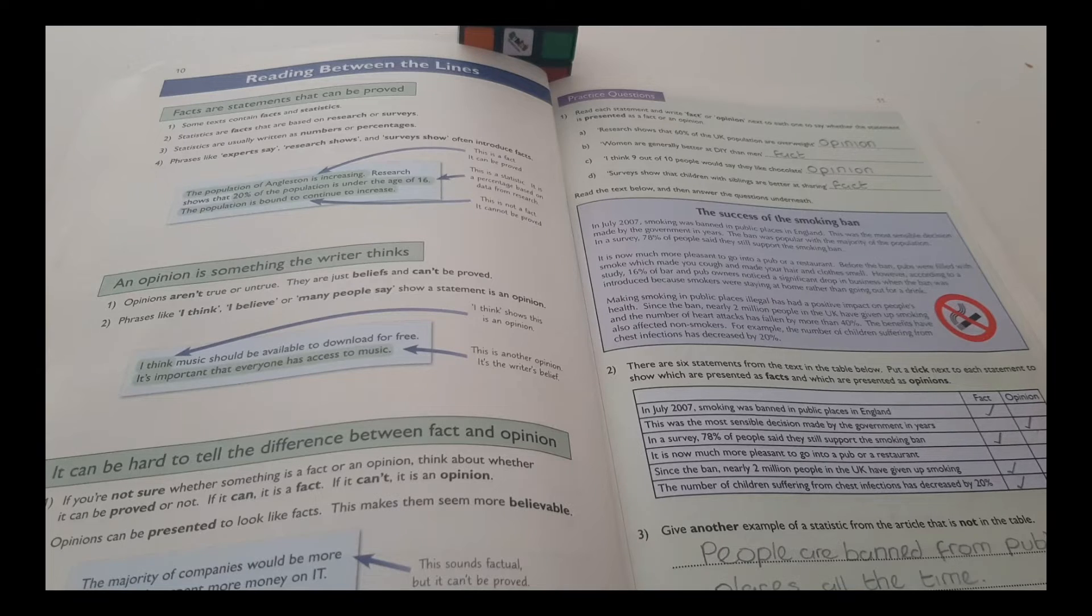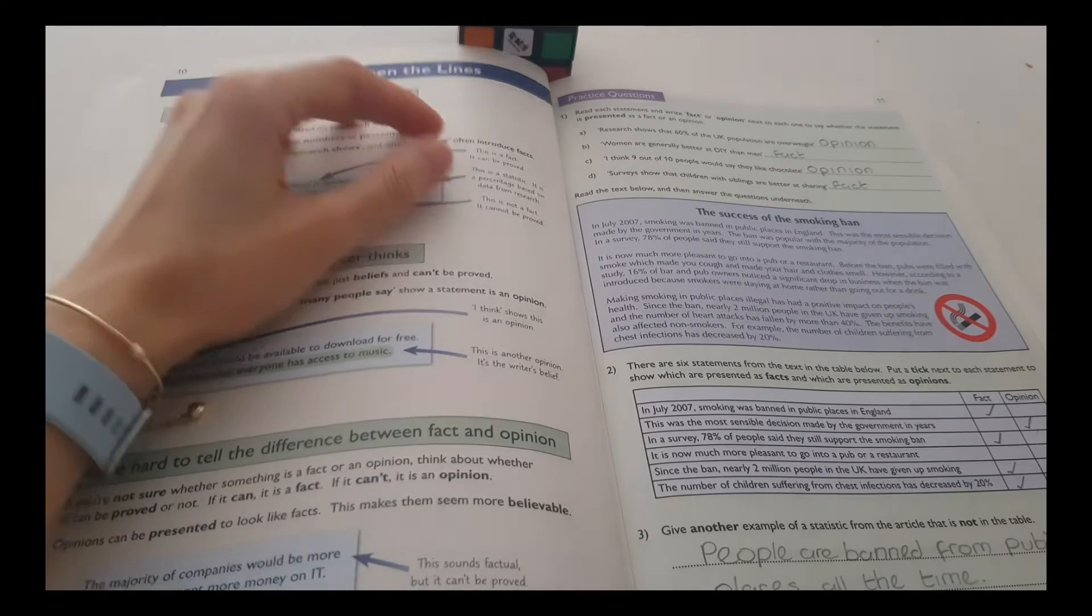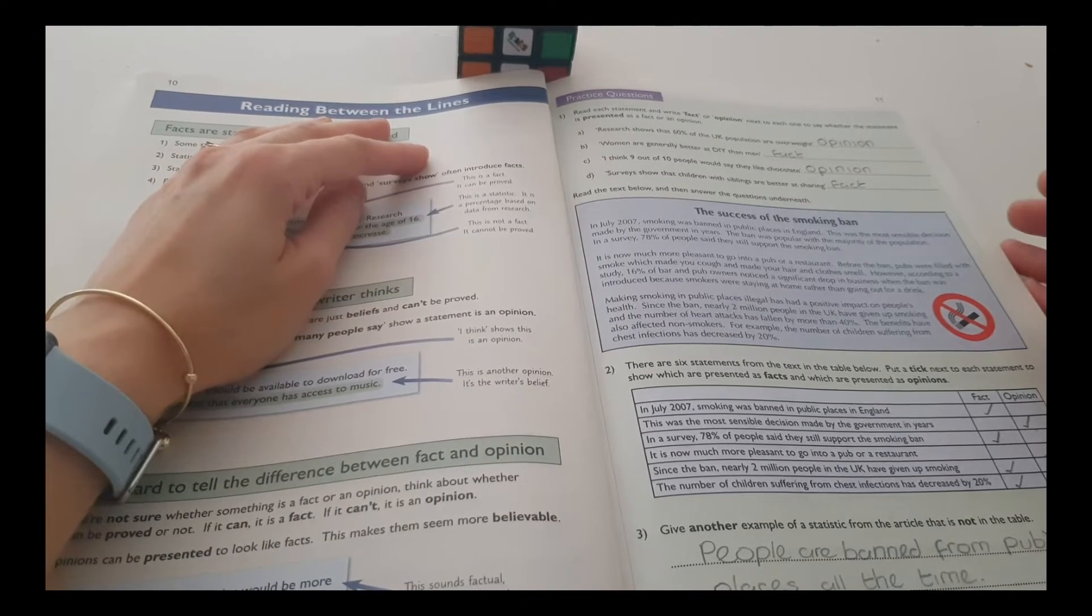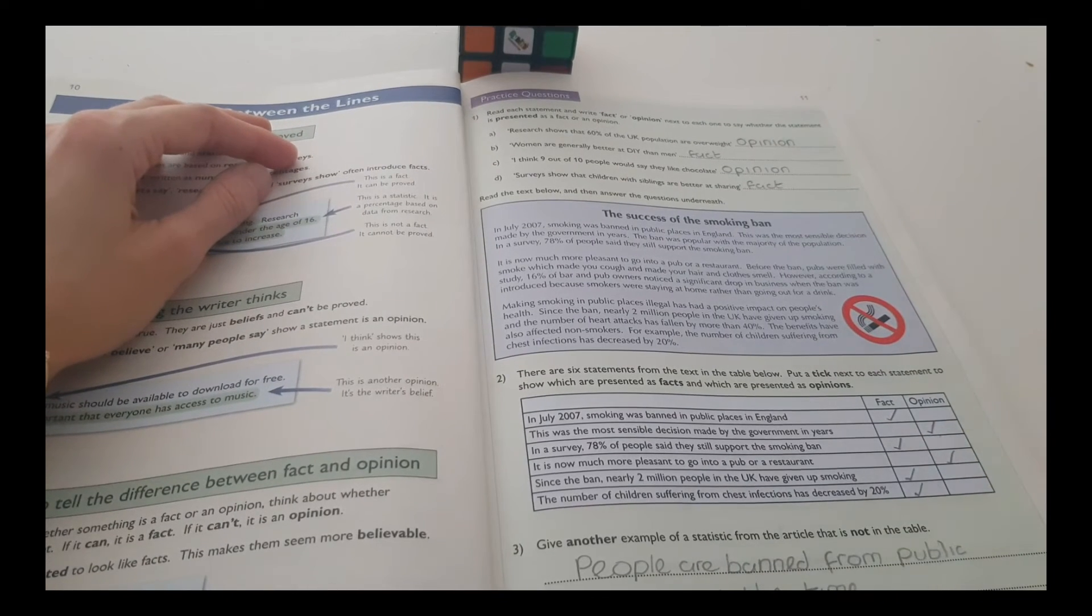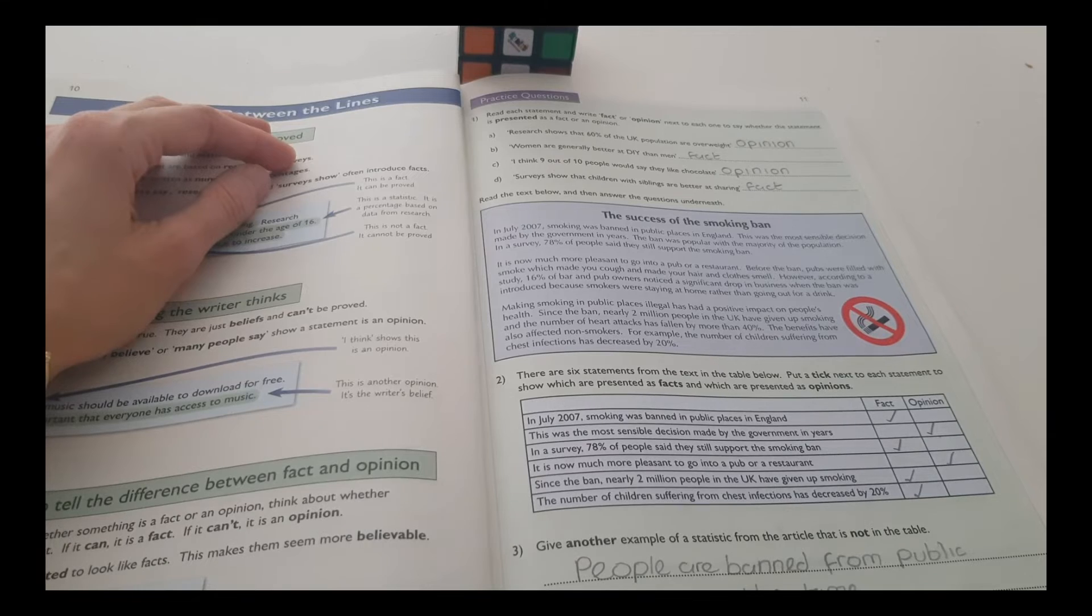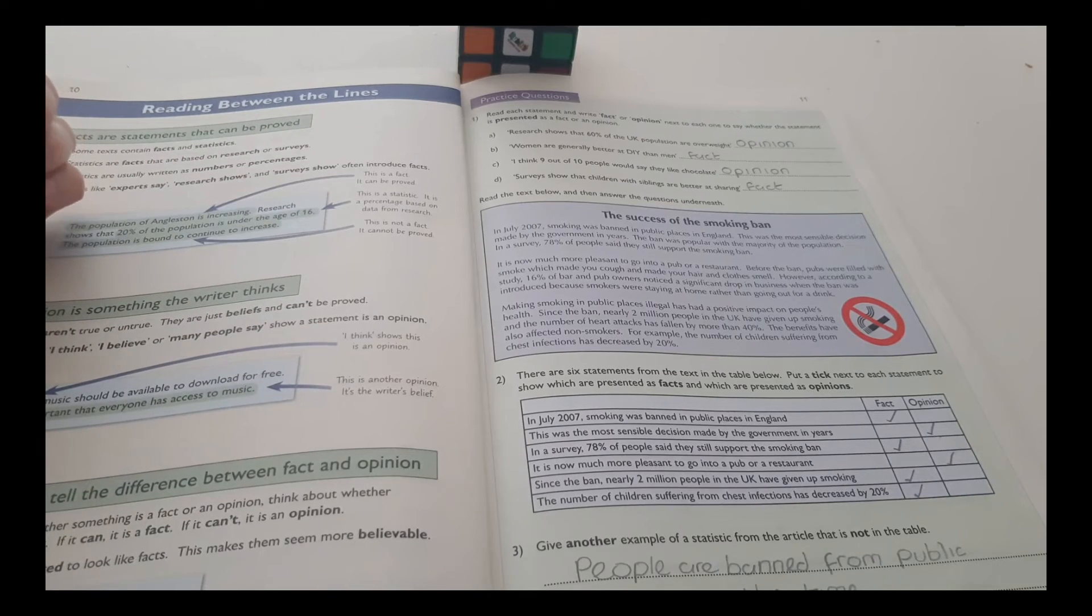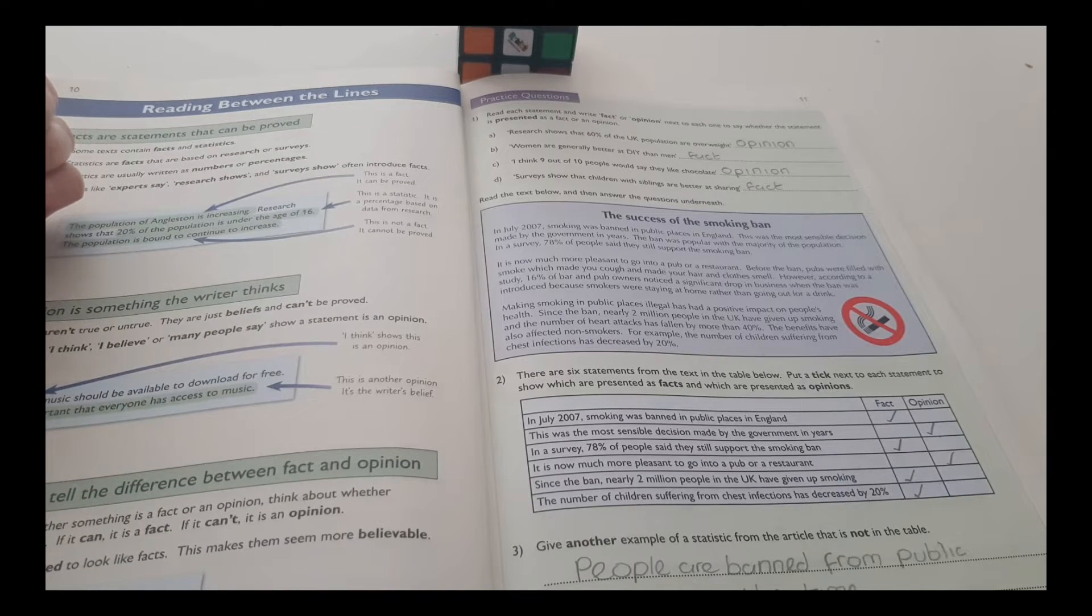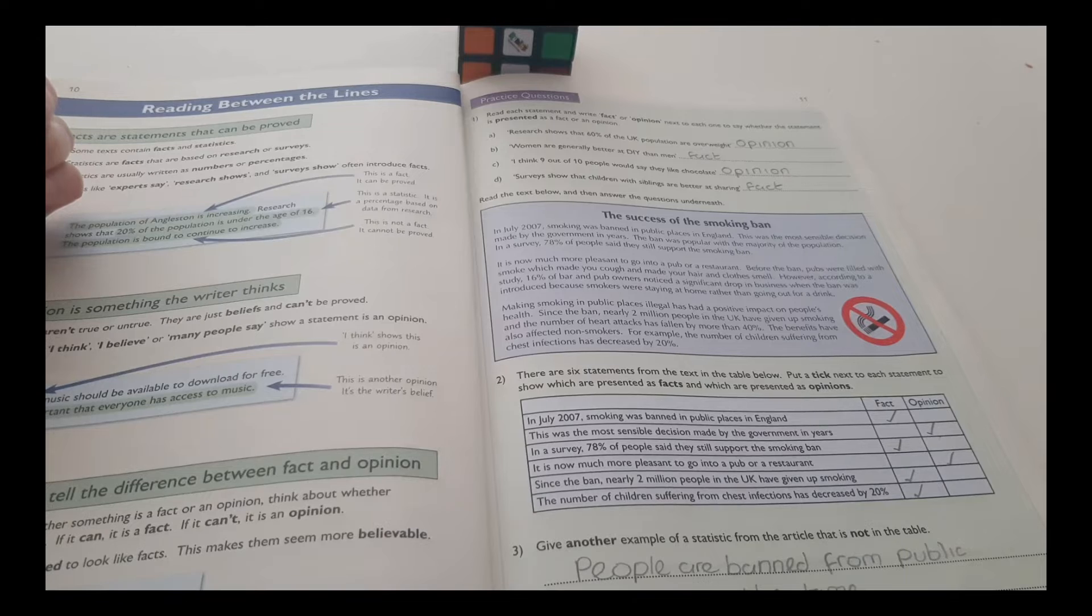Let's practice some questions. Read each statement and write fact or opinion next to each one to say whether the statement is presented as a fact or an opinion. Research shows that 60% of the UK population are overweight. Opinion.